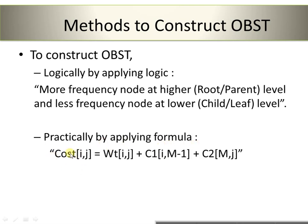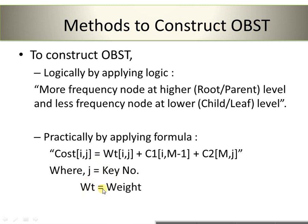The formula I need to apply is: cost(i, j) = weight(i, j) + cost1(i, m−1) + cost2(m, j), where j is the key number from the frequency table, weight (Wt) is the associated weight, and m is the current root node for which I am performing the operation.